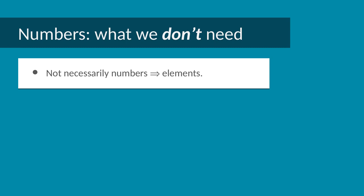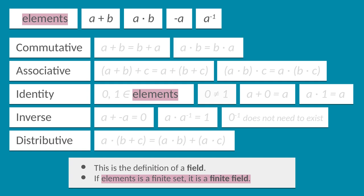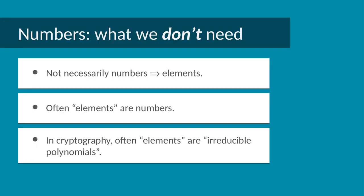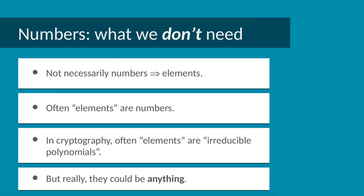Now, in practice you'll find we do use numbers to create fields, but we can use other entities instead if we want to. For example, in cryptography, irreducible polynomials are often used as the elements of a field. But the elements don't even have to be something that looks like math at all. We could create a finite field with a bunch of little cute monsters if we wanted to. So let's do that.